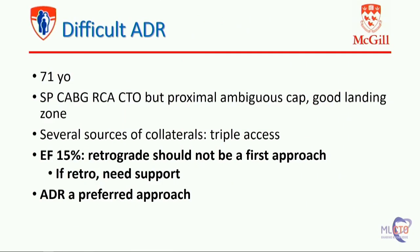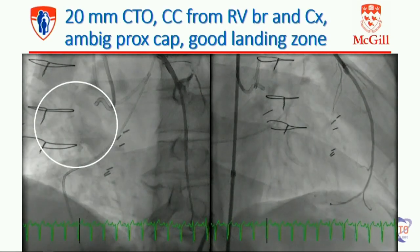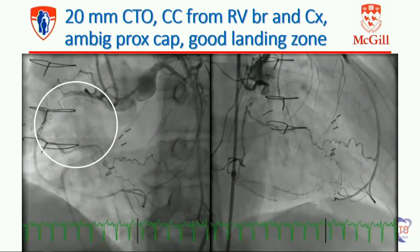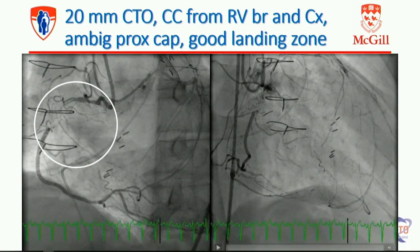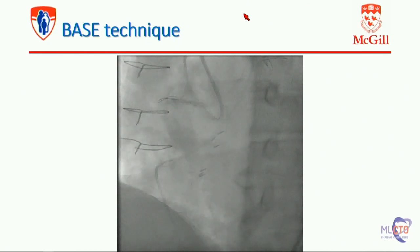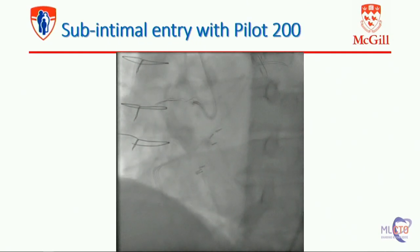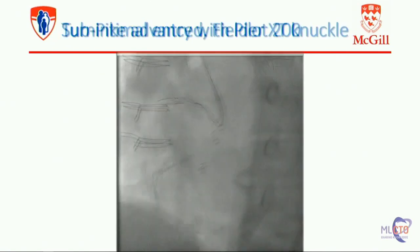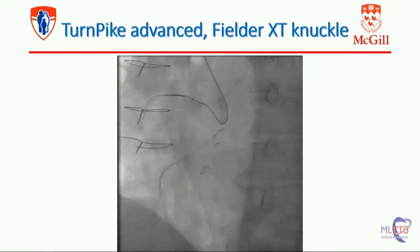In this perspective, we can understand what we're doing now. This is a case of a difficult ADR: a 71-year-old patient, post-CABG, RCA CTO, with a very ambiguous cap. We're doing a triple axis. The patient has an EF of 15% — going retrograde would need support, but going antegrade may allow us to avoid support. You can see several epicardial collaterals. There are two vessels leading to an epicardial branch — an ambiguous proximal cap. We did the BASE technique, inducing a dissection, bringing a Pilot 200 wire into the subintimal plane next to the other wire, then knuckling the wire down all the way to the re-entry spot.